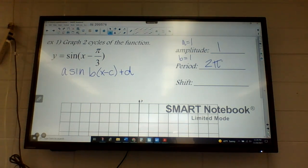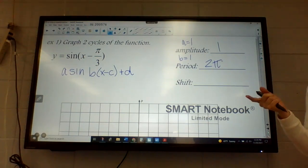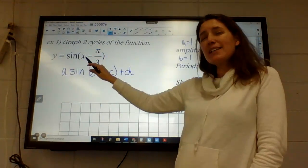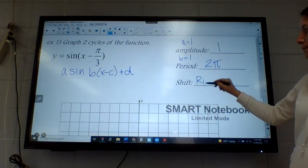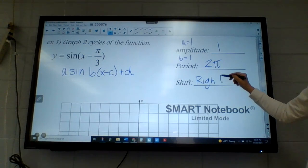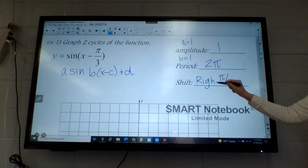So what does that pi over three do to our graph? Since it's inside the parentheses, it's going to move it to the right pi over three. Again, this is inside the parentheses is the opposite of what we're expecting. So this is going to be right pi over three. Now, if that's how I'm moving it, right pi over three.